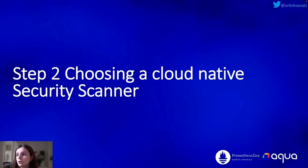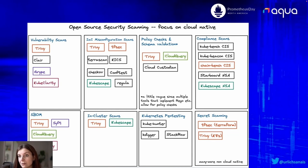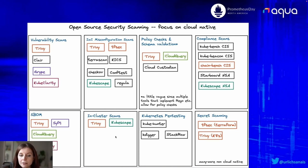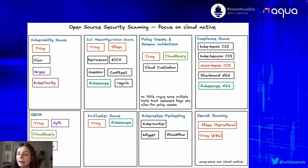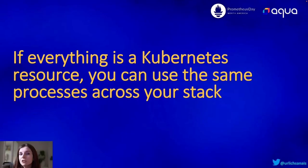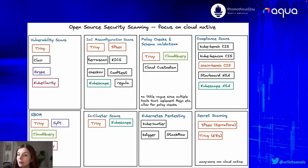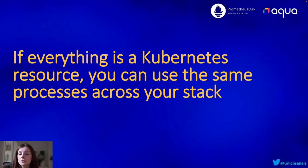Once we understand our need, we have to choose a cloud-native security scanner. You might have come across the graphic of different open source security scanners across the cloud-native space. Since I want to integrate the security scanner into our observability stack, which runs as Kubernetes resources within our cluster, we're going to focus on in-cluster security scans. The main tools there are Trivy and Kubescale. I'm going to use Trivy because I'm biased, but you can use any tool as long as it allows you to export metrics. The additional benefit of an in-cluster security scanner is that if everything is a Kubernetes resource, you can use the same processes across your stack.